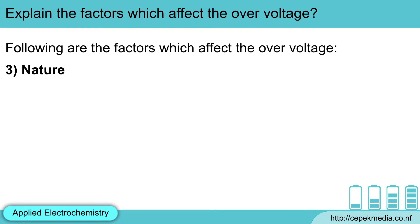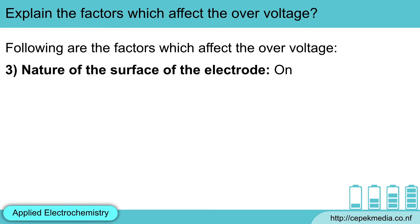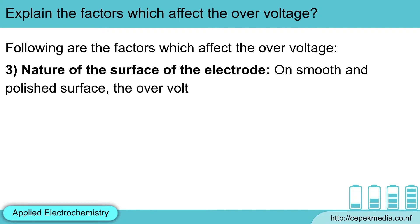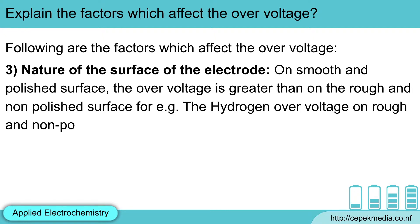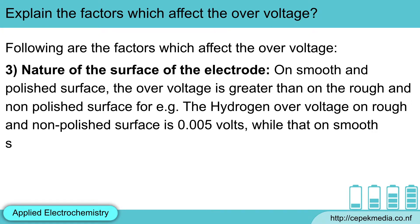Third, nature of the surface of the electrode. On smooth and polished surfaces, the overvoltage is greater than on rough and non-polished surfaces. For example, the hydrogen overvoltage on a rough and non-polished surface is 0.005V, while that on a smooth surface is 0.09V, for the same solution.